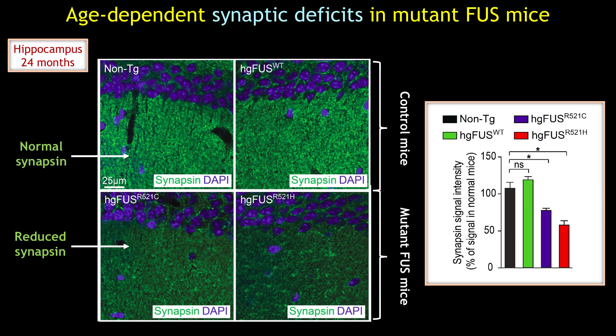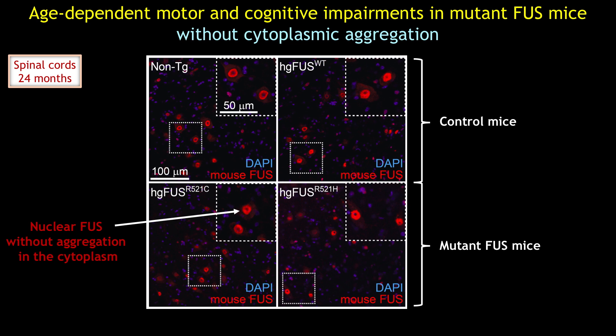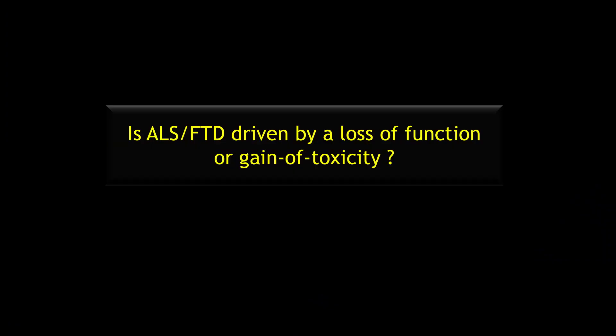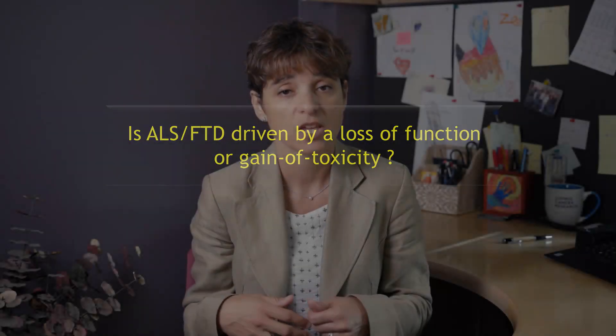However, despite disease initiation and progression in our mutant FUS mice, we did not observe evidence of major cytoplasmic aggregation or mislocalization of the FUS protein. We also asked whether ALS and FTD-causing mutants of FUS, which are primarily found in the nucleus, drive disease through a loss of function or gain of toxicity. We found disease is driven primarily by a gain of toxicity associated with RNA-expression changes, rather than loss of FUS function, as these changes did not overlap with those caused by the loss of FUS.